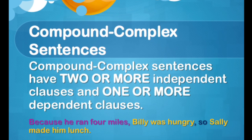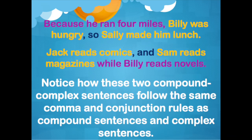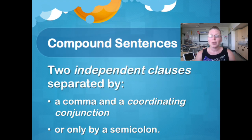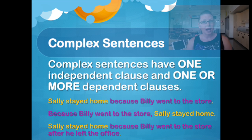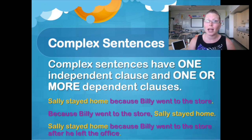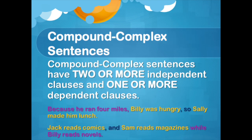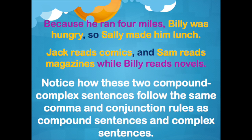We also have compound-complex sentences, and compound-complex sentences are basically what they sound like — a combination of compound and complex sentences. Compound sentences have two independent clauses separated by a coordinating conjunction and a comma. Complex sentences have one independent clause and one dependent clause. So a compound-complex sentence has two or more independent clauses along with one or more dependent clauses — they can have as many clauses as they need.